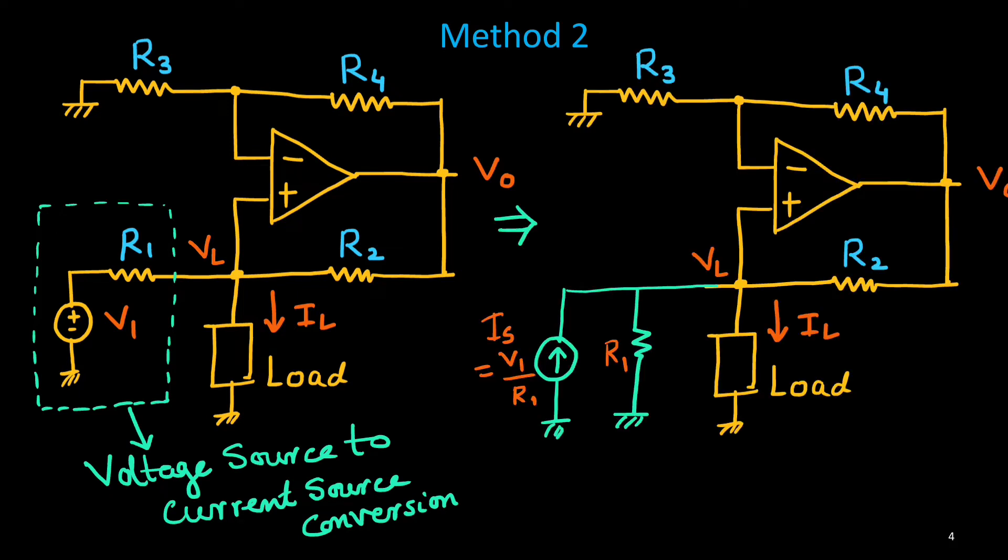One current source with parallel resistance. So, voltage source to current source conversion that we can use. So here you will see, this is the current source and this resistance. You know that the resistance will remain same, this resistance is R1. So here also it will be R1. And this current source, its magnitude will be this voltage upon resistance. So, V1 upon R1. And it is upward current. So, this current source magnitude is V1 upon R1, and a parallel resistance with respect to this current source is R1, is connected.